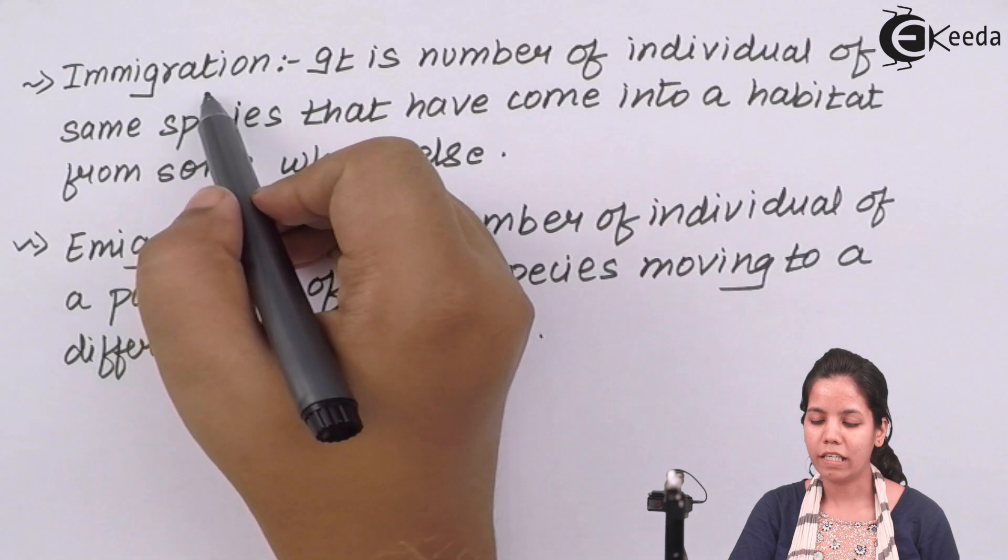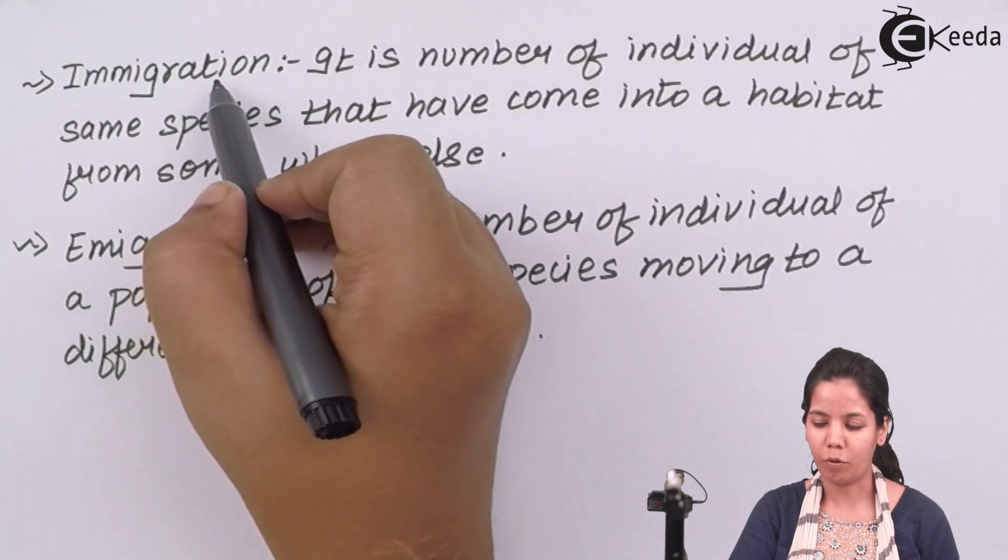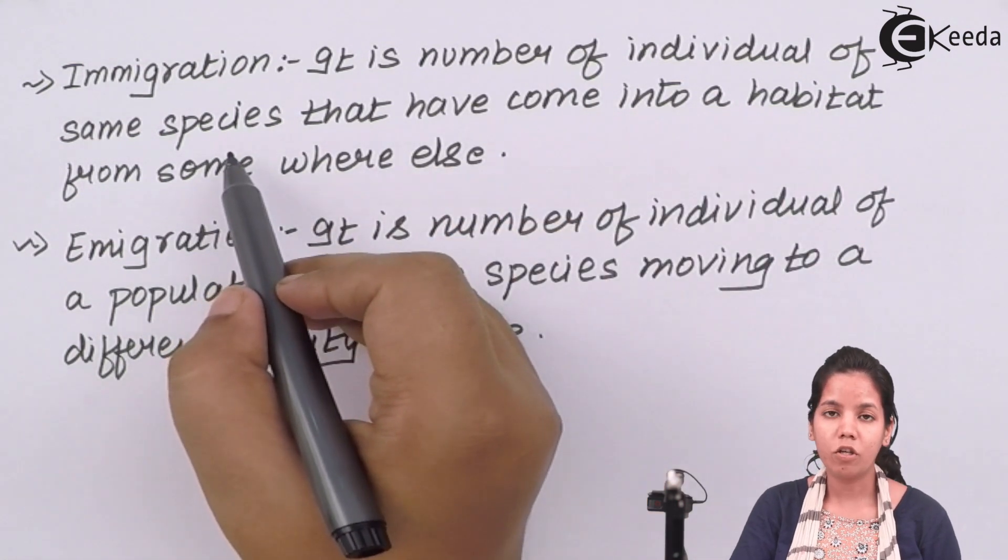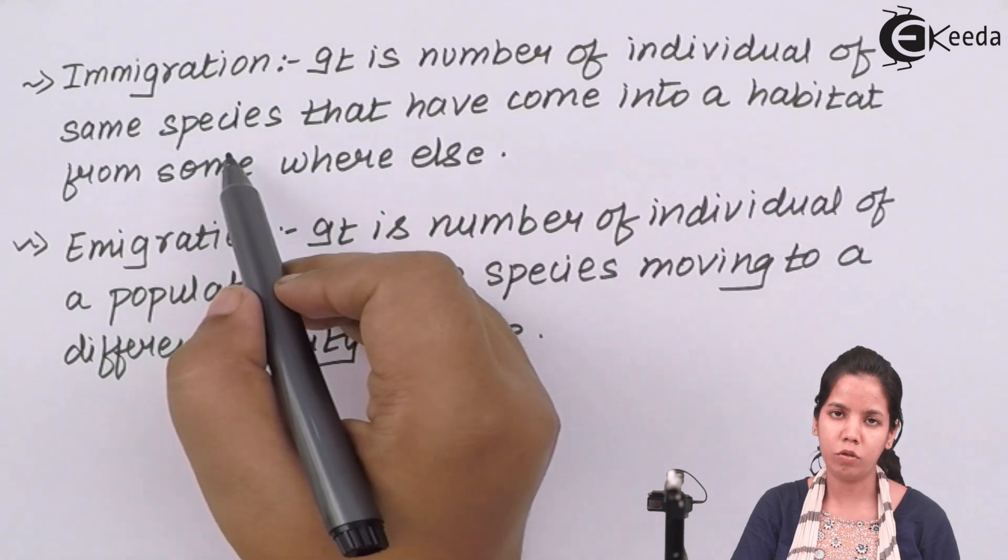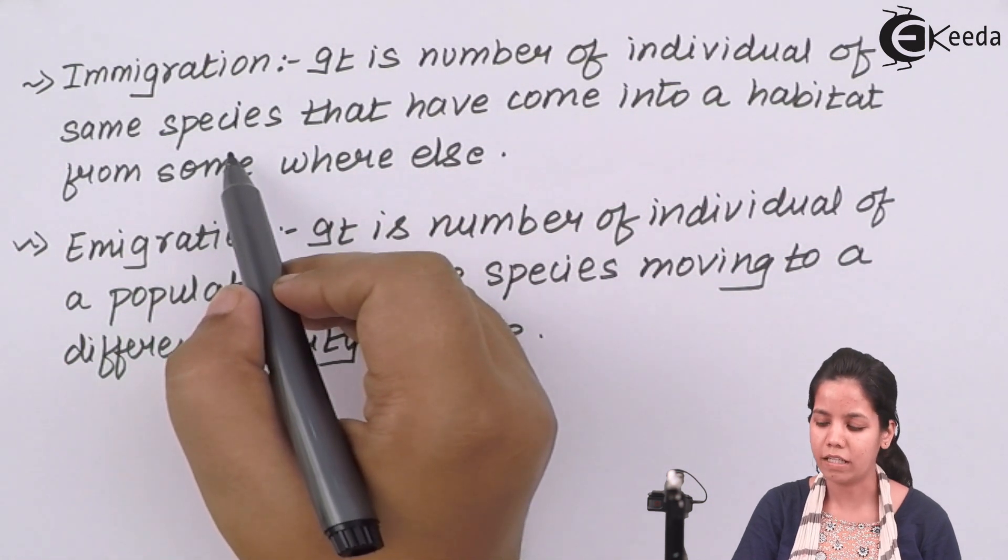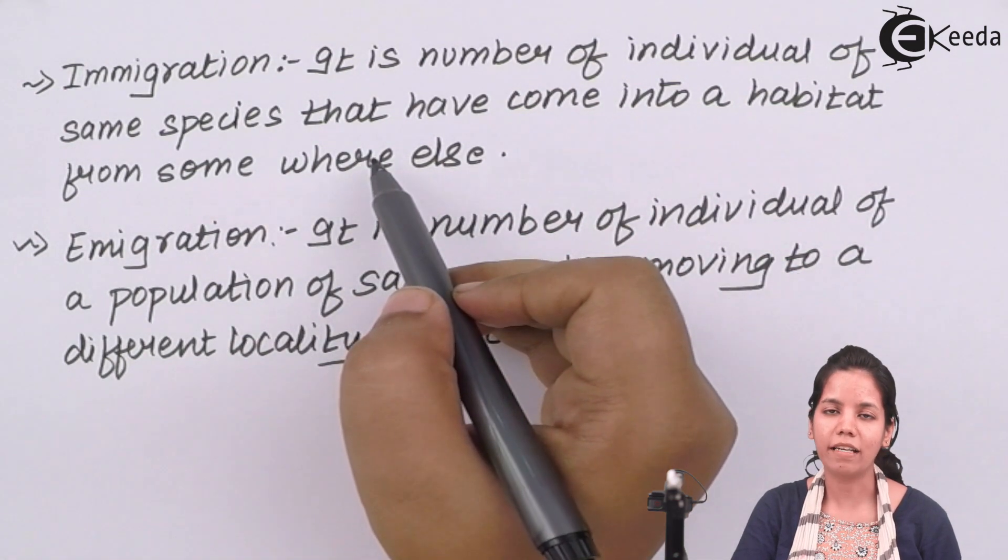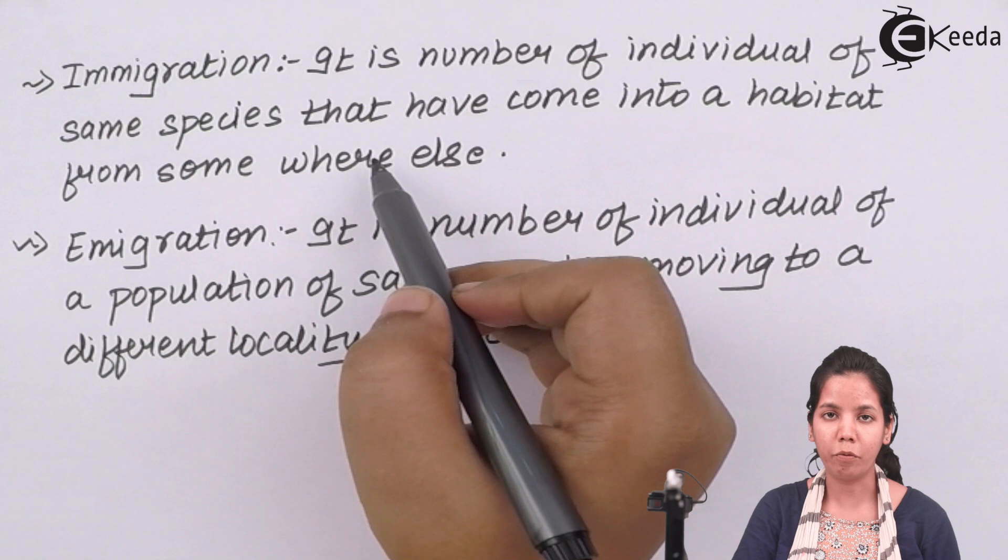Density of population can be increased due to immigration. It is the number of individuals of the same species. For example, large number of human beings move from different rural Indian states like Uttar Pradesh to Mumbai city and come and find a habitat in Mumbai. That is immigration which adds to the density of population of Mumbai city.